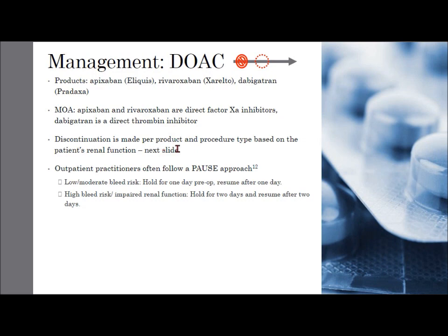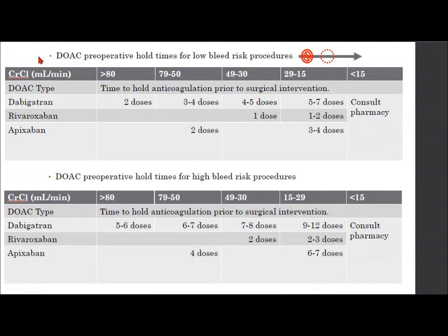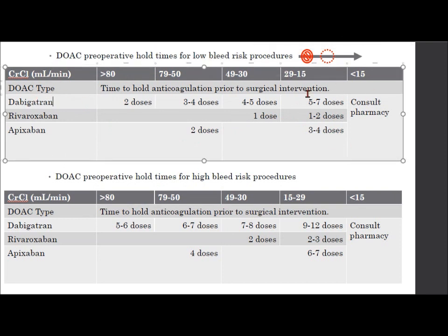Discontinuation is based on the patient's renal function. Outpatient practitioners often follow a pause approach — in low to moderate bleed risk they hold the anticoagulant one day pre-op and resume after one day; in high bleed risk or impaired renal function, they increase it to two days. Inpatient, we're more careful and worry about creatinine clearance reflecting renal function. For dabigatran with a creatinine clearance down to 30, you can figure out the hold period from the reference table. Pharmacy consult is recommended when renal function declines permanently, as you may need to reconsider DOAC use altogether. If it's an acute kidney injury, you can wait until they recover.